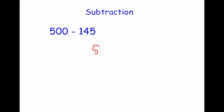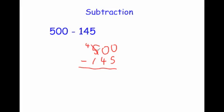Our last example is 500 subtract 145. We've got 0 take away 5 — we can't do that, so we need to borrow 1. But in this question the next digit is already a 0, so we have nothing to borrow from directly. What you do is cross off the 5 and make it a 4. The 1 can only move across one column, so this becomes a 10 — but that still doesn't help us with 0 take away 5.